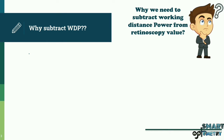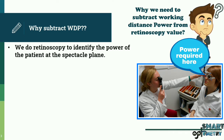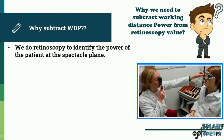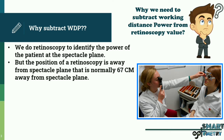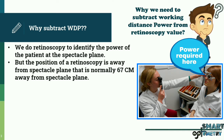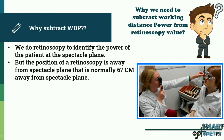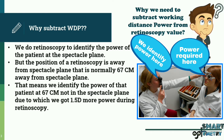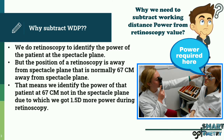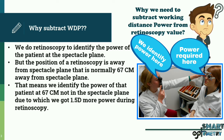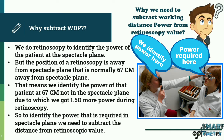You might be wondering why we need to subtract the working distance power from the retinoscopy value. We perform retinoscopy to identify the power of the patient at the spectacle plane. However, the retinoscope is positioned away from the spectacle plane — normally 67 centimeters away — meaning we are identifying the patient's power at 67 centimeters, not at the spectacle plane. Due to this, we get 1.5 diopters more power during retinoscopy, so we must subtract the working distance power from the retinoscopy value to find the correct spectacle plane power.